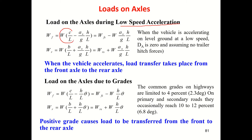The first part — W(c/L) — is the static load on the front axle, Wfs. The second part is called the dynamic load. There is a minus sign here for the front axle and a plus sign for the rear axle.